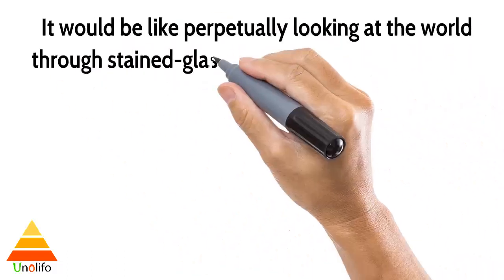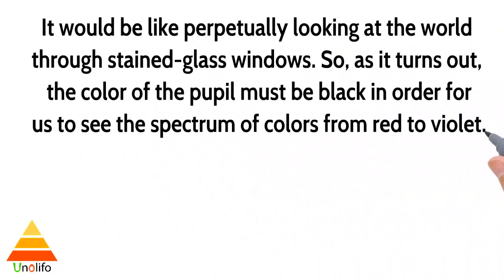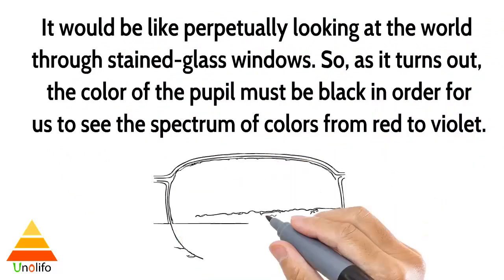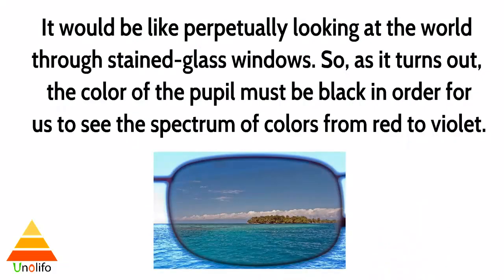It would be like perpetually looking at a wall through stained glass windows. So as it turns out, the color of the pupil must be black in order for us to see the full spectrum of colors from red to violet.